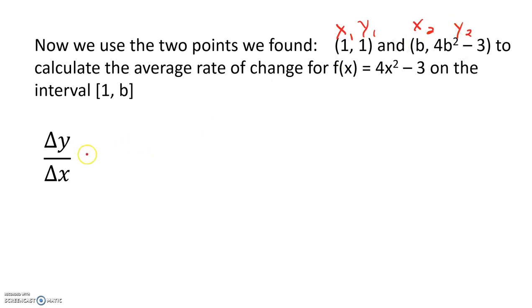The formula tells us to find the change in y, which is y₂, 4b² minus 3, minus y₁, which is 1, all over x₂ minus x₁. When we simplify that, we get 4b² minus 4 over b minus 1.